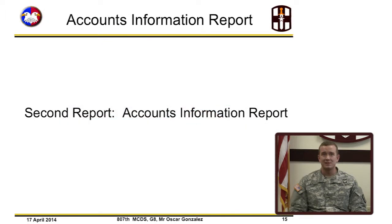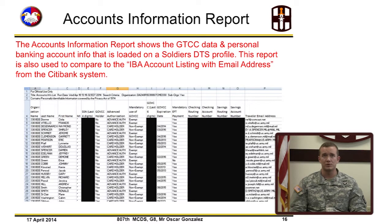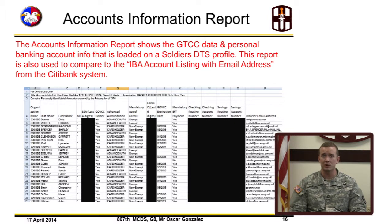The second DTS report we're going to cover is the Account Information Report. The Accounts Information Report shows the government travel charge card data and personal bank account information that is loaded on a soldier's DTS profile. This report is also compared to the IBA account listings with email addresses.